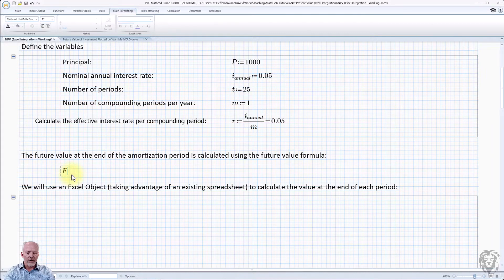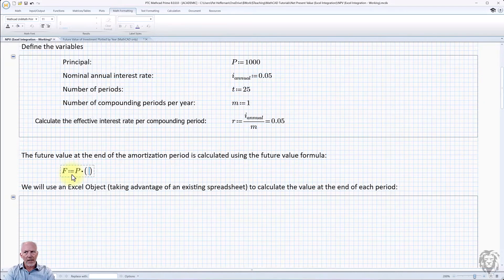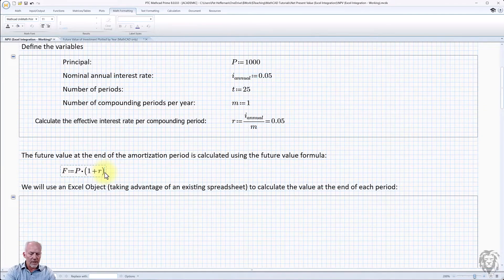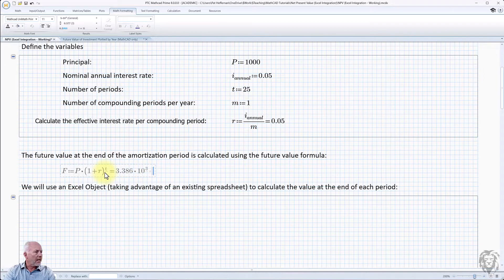So we're going to look for the future value at the end of our period. We set it equal to our principle, which is then multiplied by one plus our rate of interest. And everything here is raised to T out.